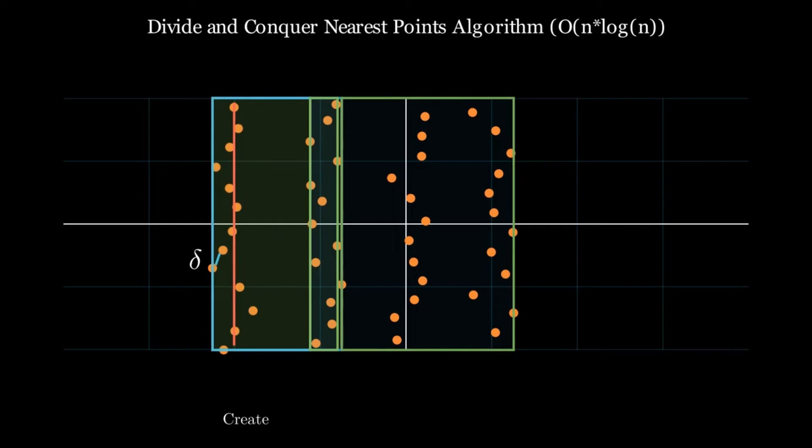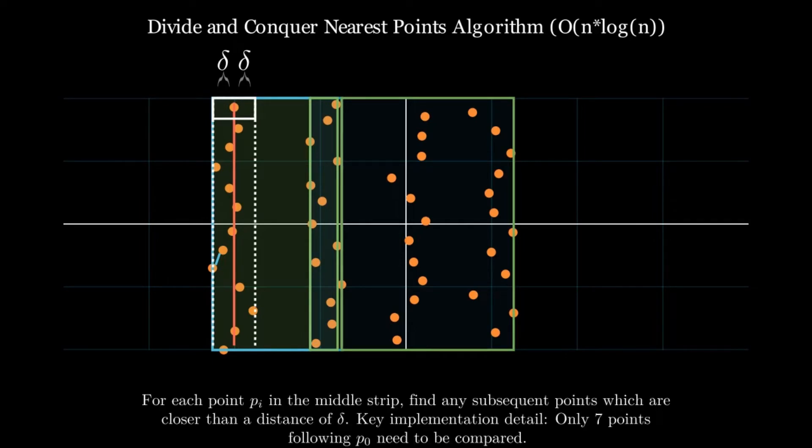To find a cross partition's shortest distance in linear time, we'll start by creating a two delta wide strip around the partition midpoint. For each point within the two delta wide strip, compare that point to the next seven points in the strip, sorted by Y coordinate.